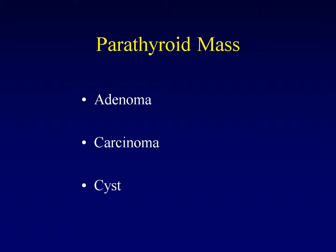When we encounter a parathyroid mass incidentally, what might it be? It might be an adenoma, it might be a carcinoma, or it might be a benign cyst. Unfortunately, these are very difficult to tell apart. You would think the cyst would stand out from the adenoma because it would be less dense, and you'd think the carcinoma would have aggressive features. Unfortunately, it's not that easy, and all three of these need to be on most differentials.